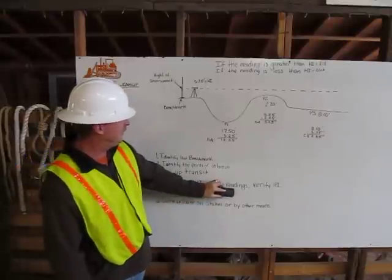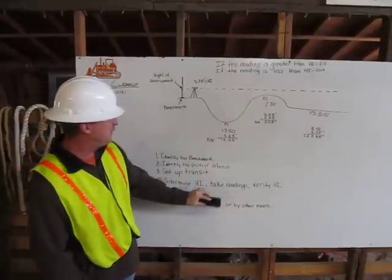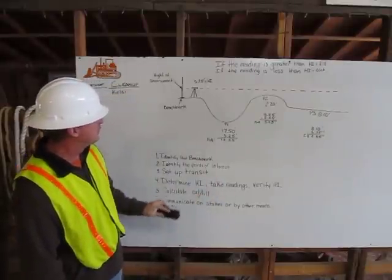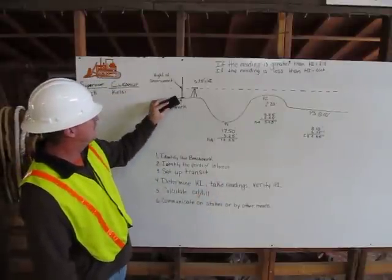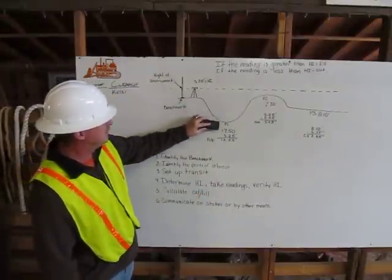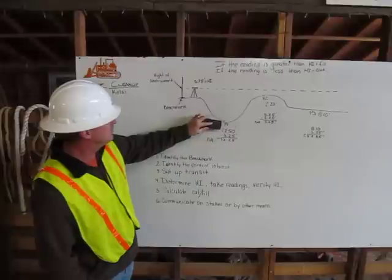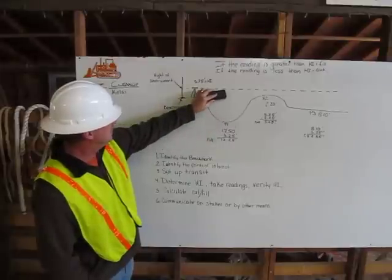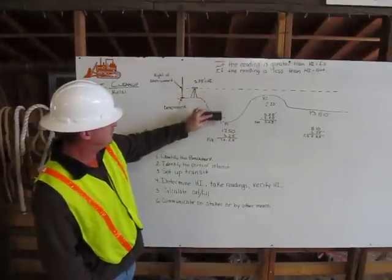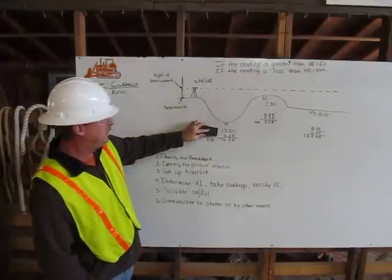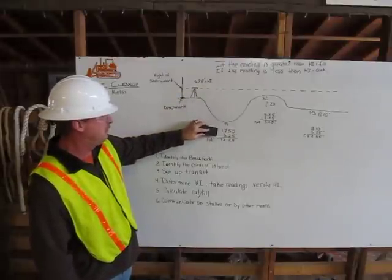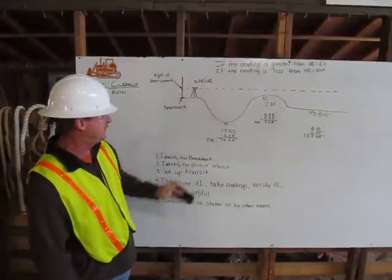Next, I'll take the readings of my three points of interest, so I'll move my engineer's rule down to point one of interest, up to my height of instrument, and that reading will give me 17.5 feet.